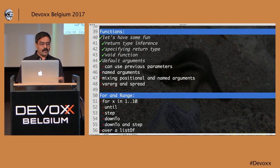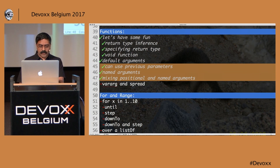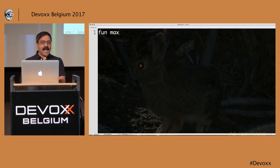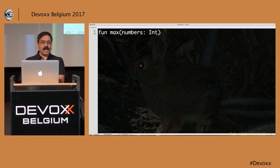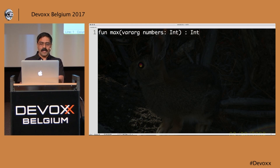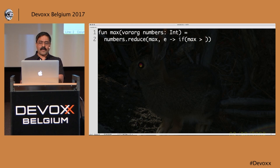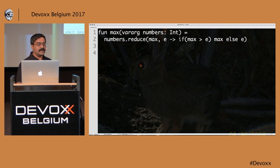That's basically about named arguments and how you can mix them. One of the other things is variable number of arguments. I'm going to create a function called max that takes 'numbers: Int' with vararg. vararg allows me to pass multiple arguments to this particular function. I'll leverage type inference and use numbers.reduce — taking a max value and an element, returning max if max > element, else element. That becomes a nice little function for getting the max.